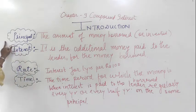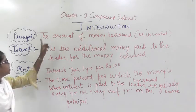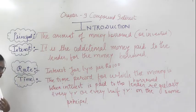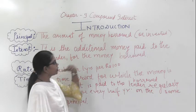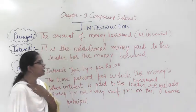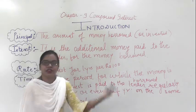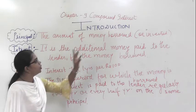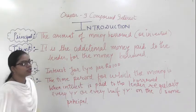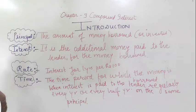The first term is Principal. Principal in compound interest means the amount of money borrowed or invested. Suppose you are opening a shop — either you will invest money in it or you will borrow money for it. The amount of money which you are going to invest or borrow is the Principal.